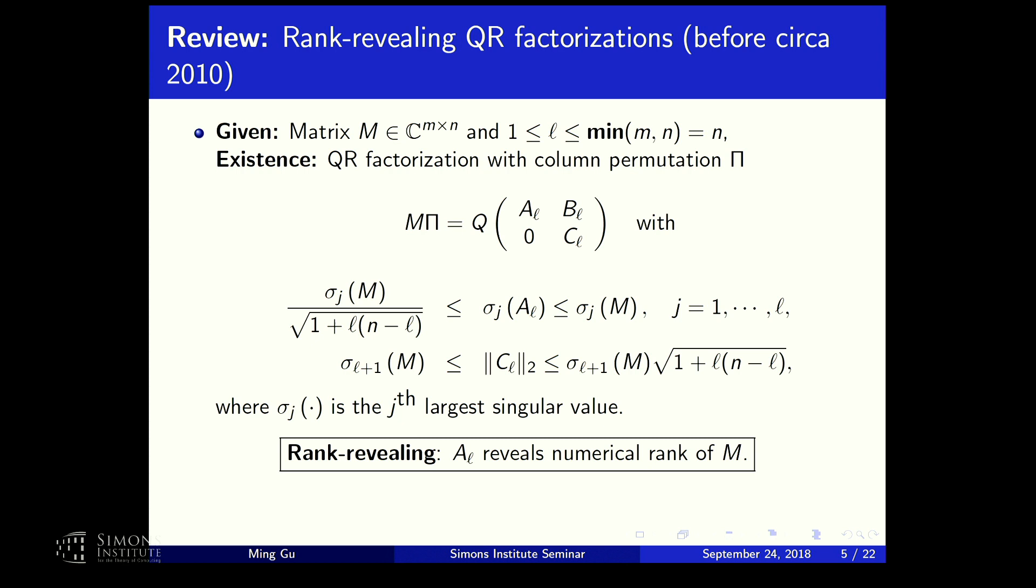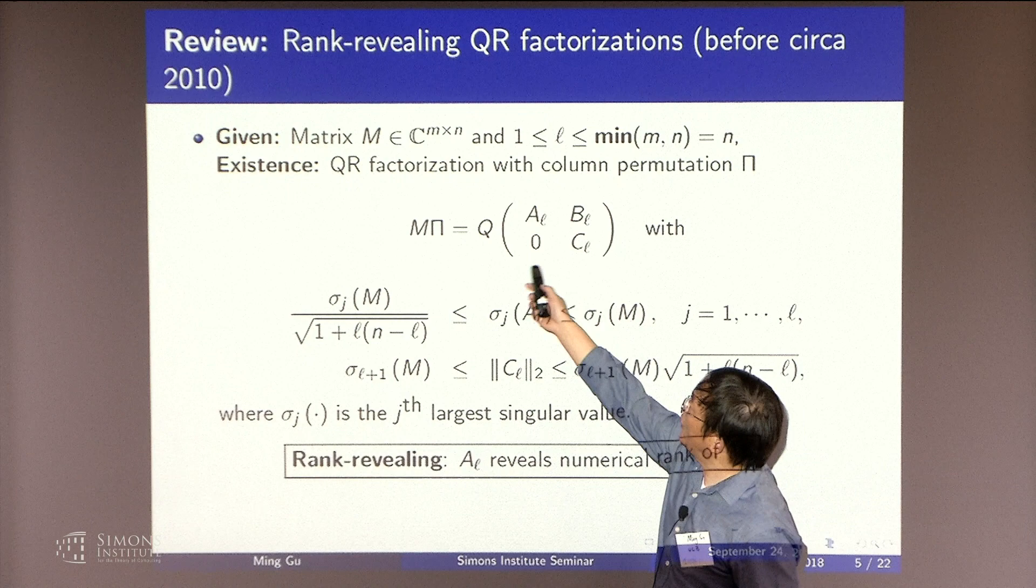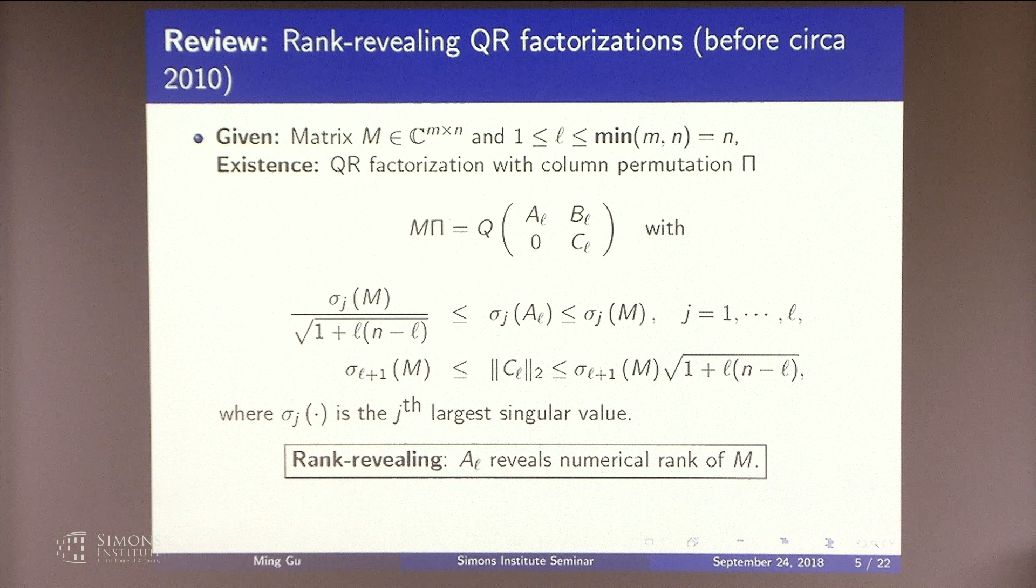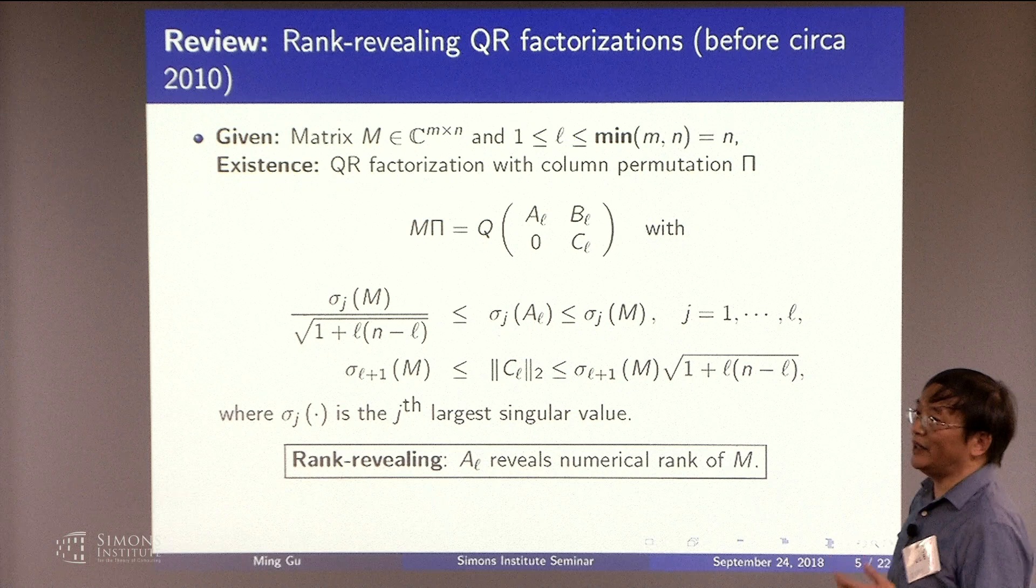So this is a traditional way to look at the rank revealing factorizations. You're looking at a QR factorization. The Q would be orthogonal, and this is going to be the R part of the matrix. Pi is a permutation. So what you're doing is you're reshuffling the columns of a matrix M. And after that, you get a QR factorization. This can be a partial factorization up to this L. Traditionally what we wanted to do was to figure out the numerical rank of a matrix so that you can do, for example, least squares correctly.